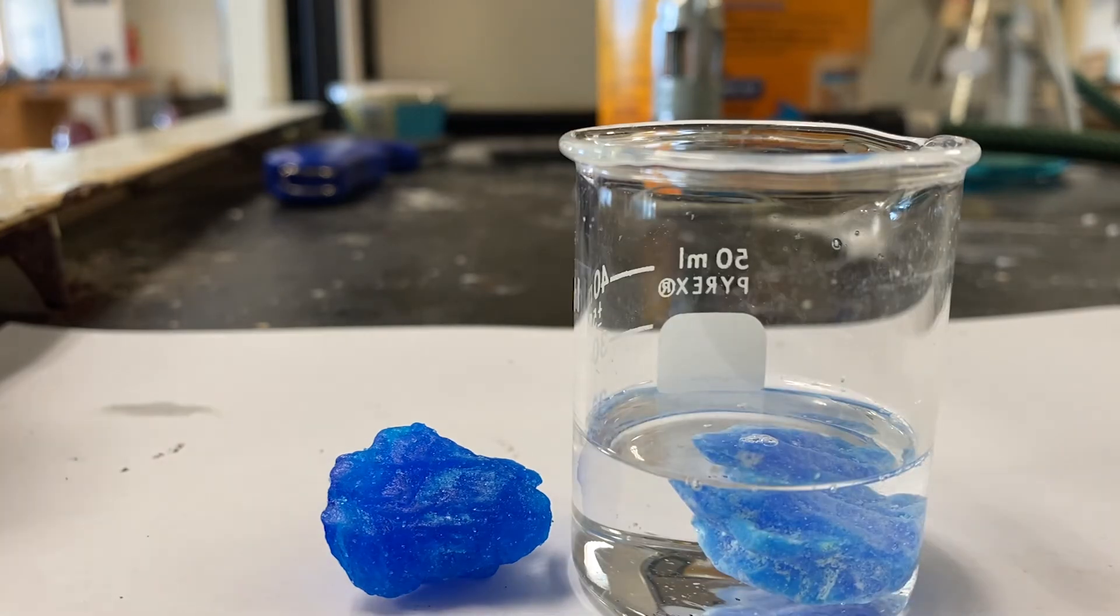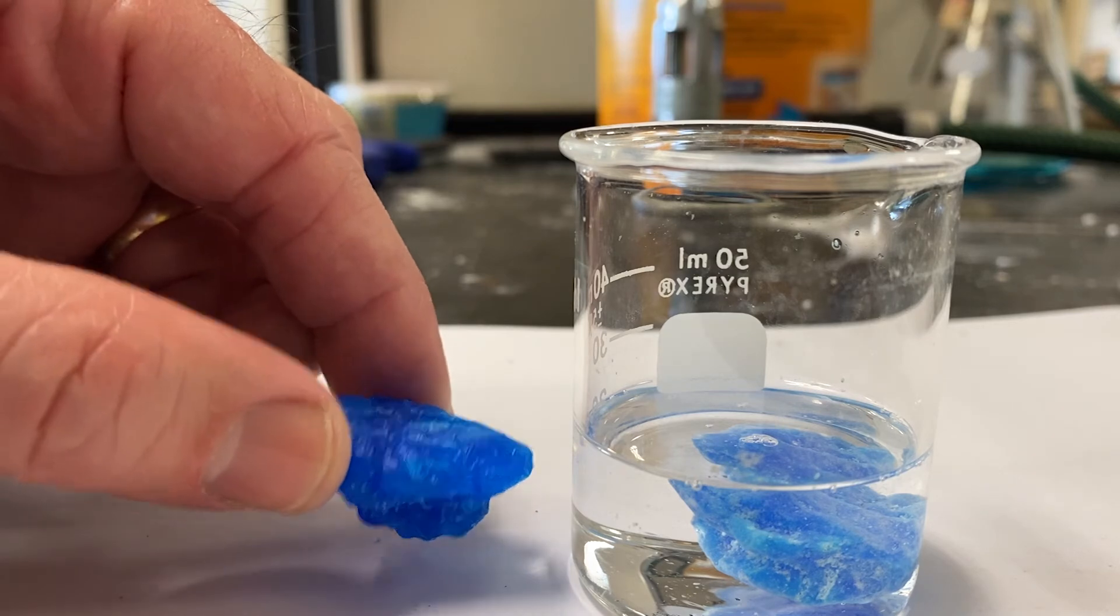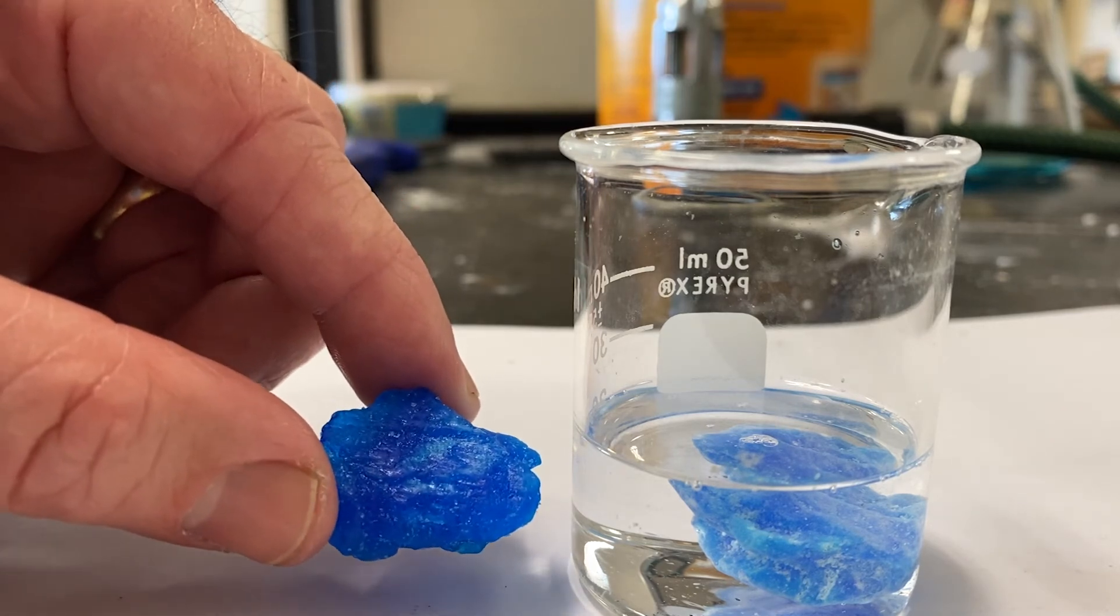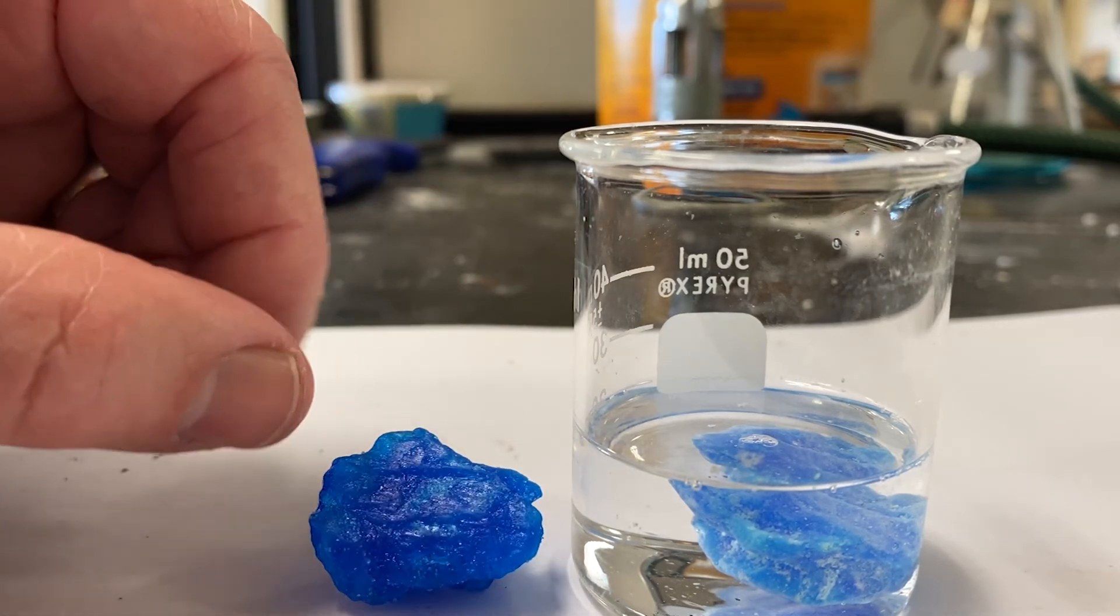And the way you can turn the hydrate into the anhydrous version is you just heat this up. You just heat it up and that will boil away the water. But I think it's more interesting to watch it in this context.